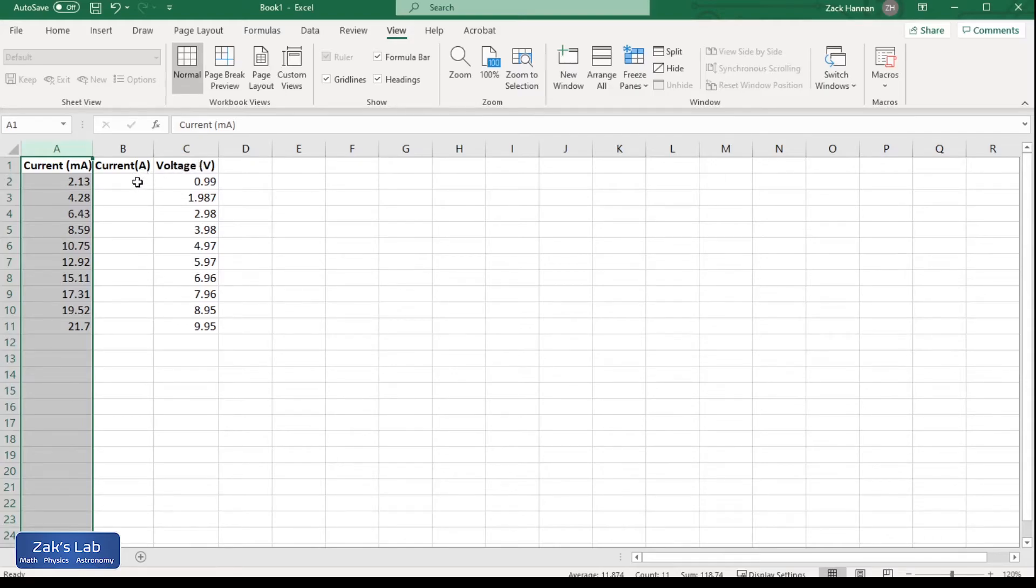So I'm going to make a new column of data where I multiply by 0.001 so I can get the current in amps. So I'm going to type in equals A2 times 0.001, and that looks right for the number of amps.